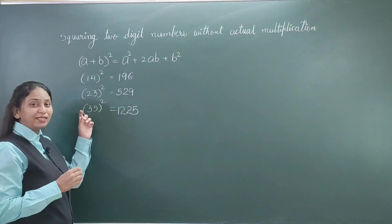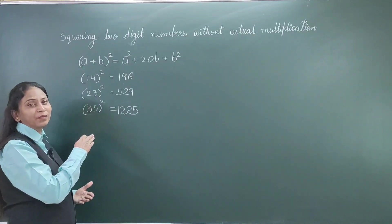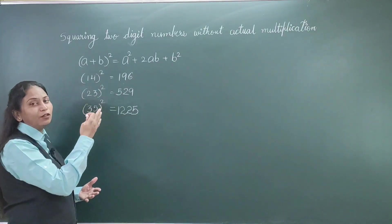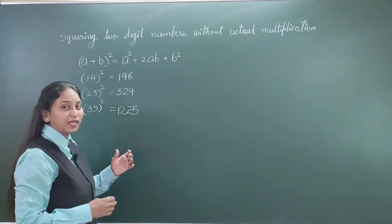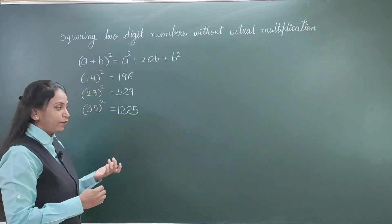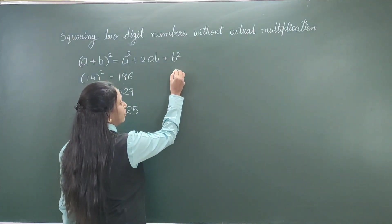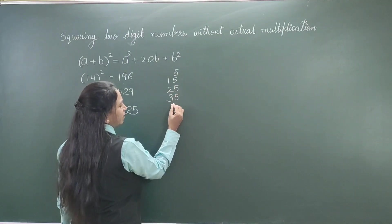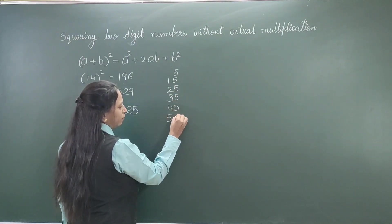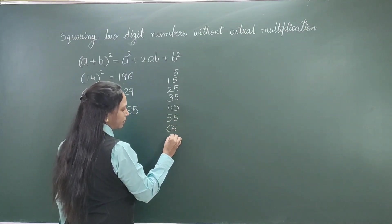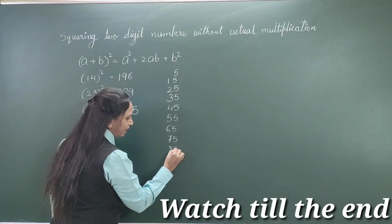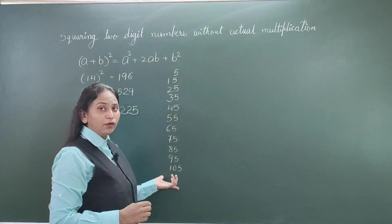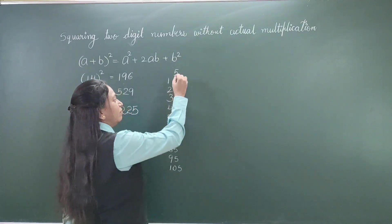Numbers which have the last digit as 5 - it is even easier than this. We need not apply this formula also. You can do squaring of digits which have unit place as 5. For example, let's start from 5, 15, 25, 35, 45, 55, 65, 75, 85, 95, and 105. This is so easy and it can be done directly.